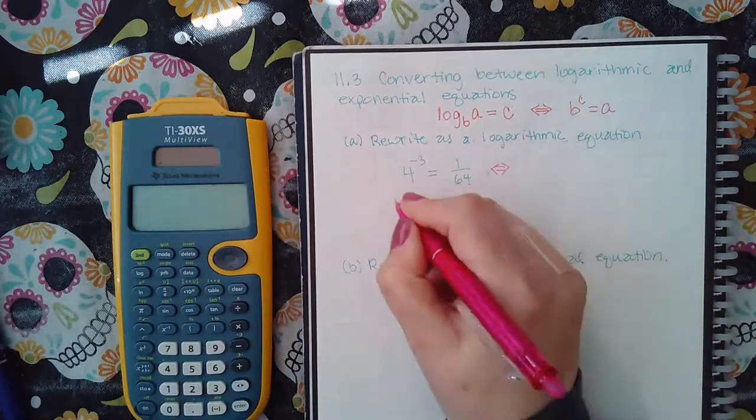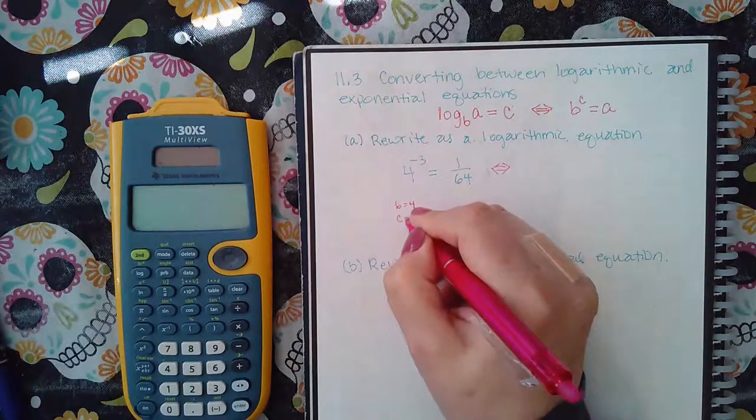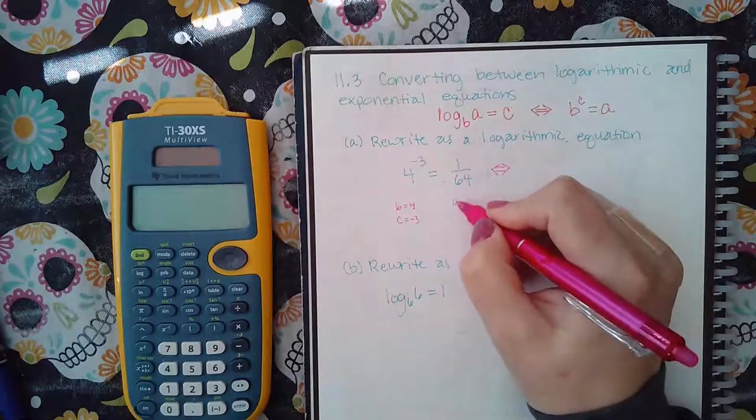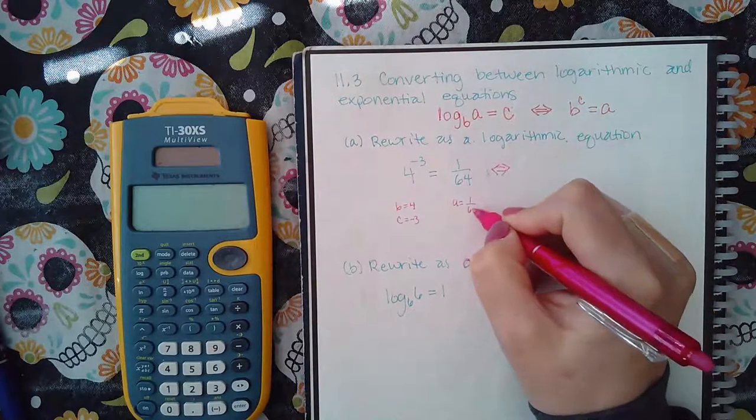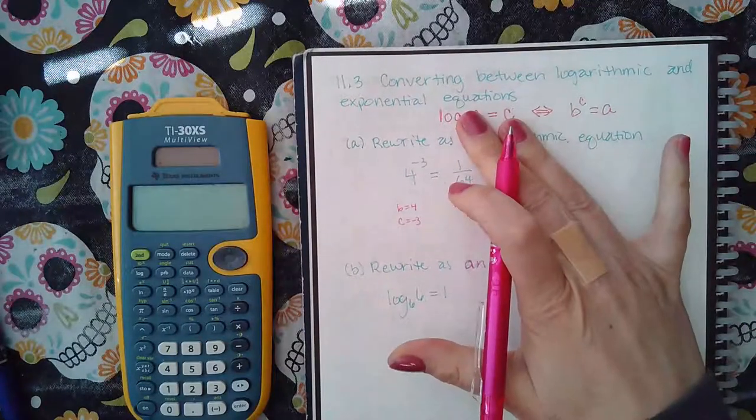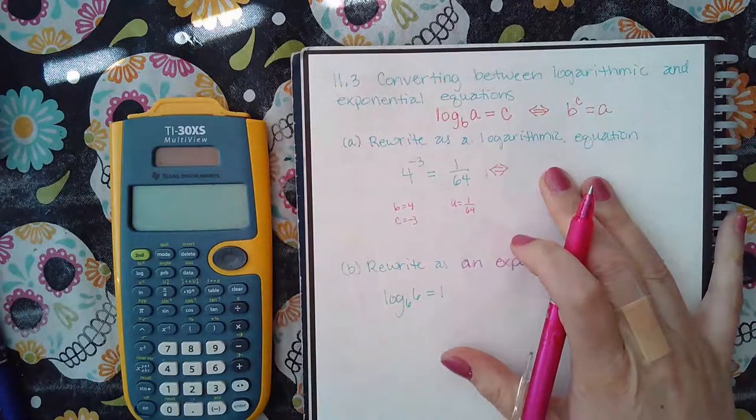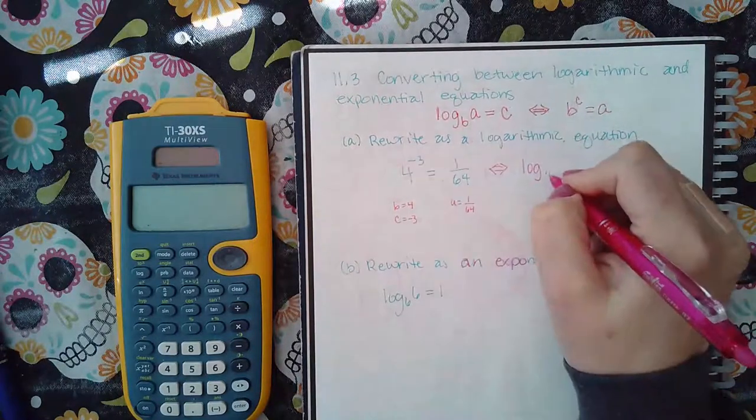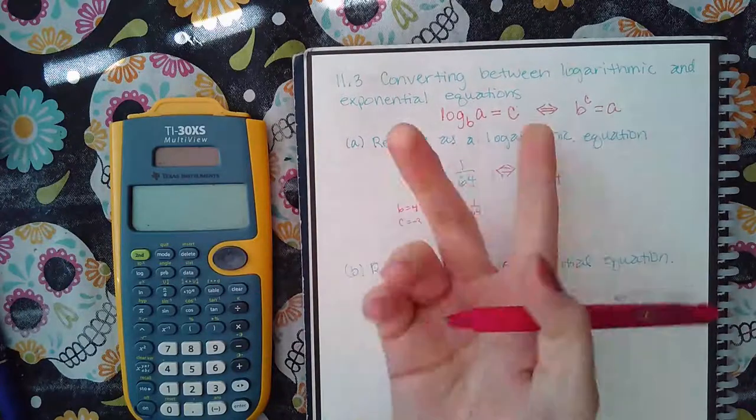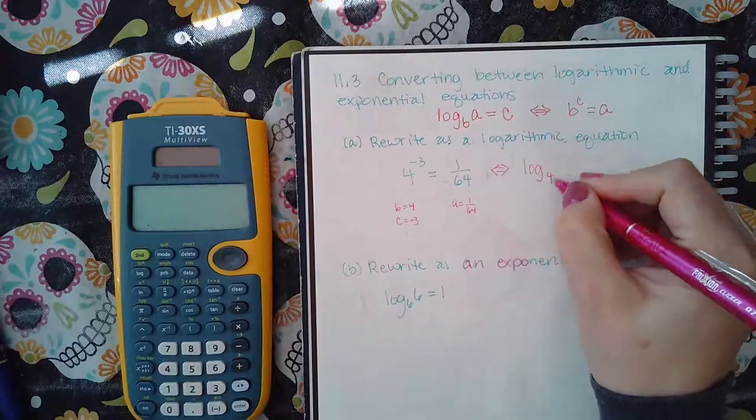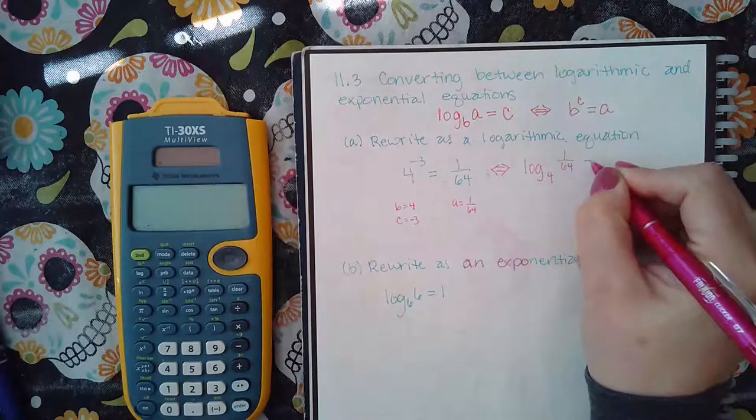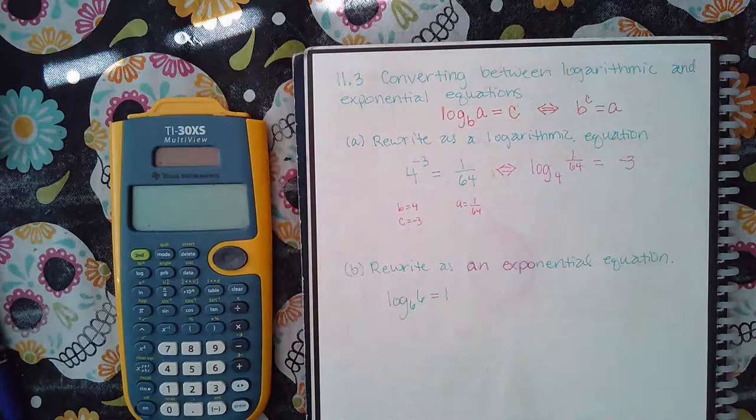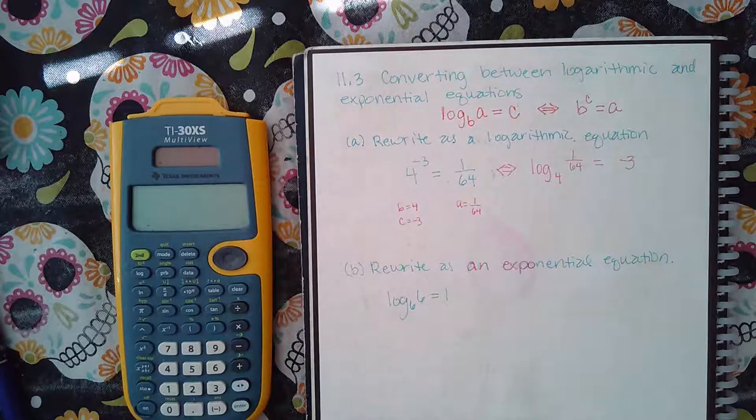Notice that my base here is four and my exponent is negative three, which leaves this guy as left to be described as a. I can put them in all the current positions and get the logarithmic form. But what I like to do is I say log base the same base as I have there, and then these two guys are going to switch. So instead of the negative three here with the four, I'm now going to have the one over 64 on the same side as the four, and then the negative three has no choice but to now be on the other side of the equal sign.